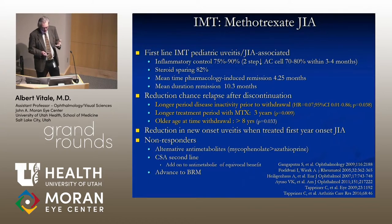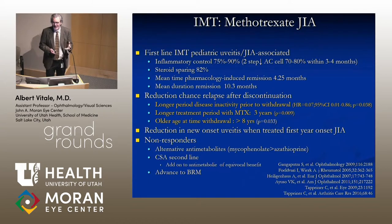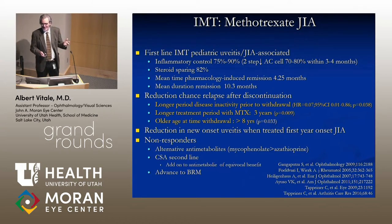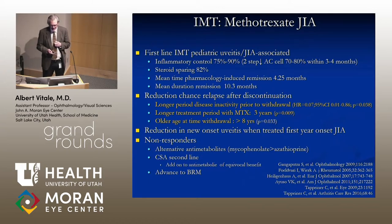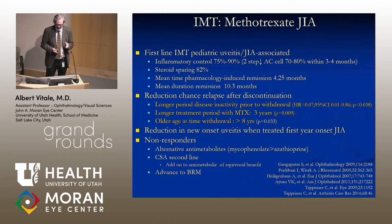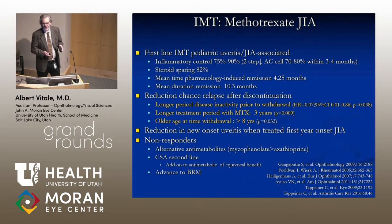Methotrexate is by far the most common first-line agent in both pediatric uveitis and JIA-associated iridocyclitis, achieving inflammatory control in about three-quarters of patients with a steroid-sparing effect. That means about a quarter of patients do not respond. One has a better chance of inducing remission with methotrexate with longer periods of disease inactivity on medication and longer periods of time on medication.